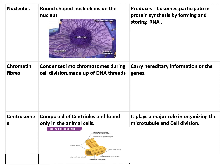Next are chromatin fibers. These are condensed forms of chromosomes — thread-like structures present inside the nucleus. During cell division, they condense and form chromosomes. They are made up of DNA threads. To summarize: during cell division, chromatin fibers condense to form chromosomes; chromosomes contain DNA; and DNA contains genes, which are the hereditary characters. Therefore, the function of chromatin fibers is to carry hereditary information, or genes.